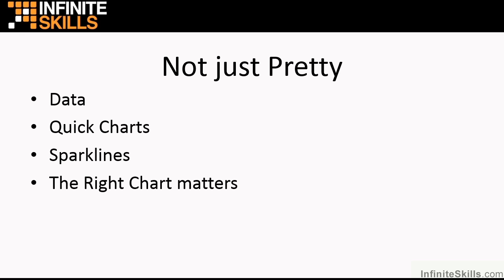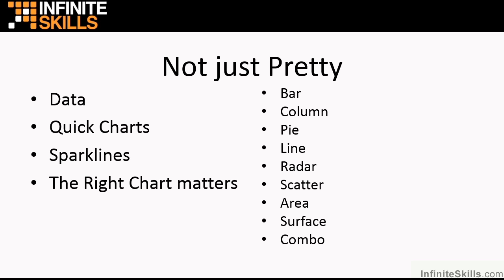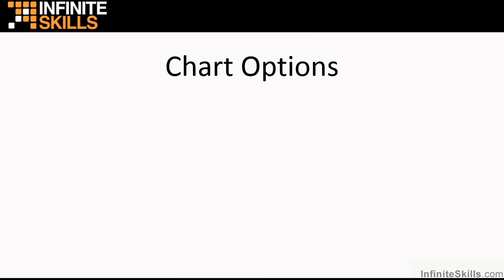We also look at little mini sparklines as an alternative to a full-blown chart. The right chart type does actually matter. There are lots of different chart types in Excel, and we go through most of them: bar charts, column charts, pie charts — one of my favorites, as you'll find out — line charts, radar charts, scatter charts, area charts, surface charts, and finally combo charts. A combo chart uses two or more of the above types in one chart.